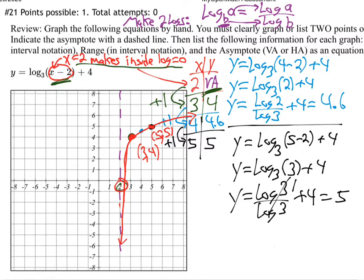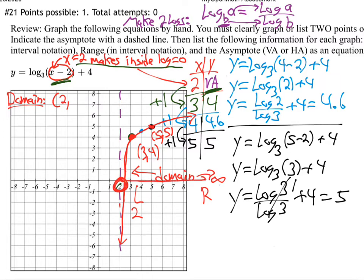They'll ask a few follow-up questions. The domain — how far left and right — goes from 2 to infinity, because the graph gets very close to 2 but never touches the vertical asymptote. So domain is (2, infinity).